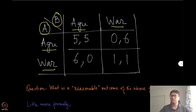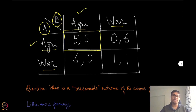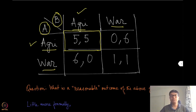The numbers in each of these boxes represent — by some number I mean we are using a representative number to denote how satisfied each of these individuals are. So if agent A picks agriculture and agent B also picks agriculture, then both of them will save their kingdom from starvation. Since both are choosing agriculture, nobody will attack each other, their produce will remain with themselves, and both get a payoff represented by the number 5.